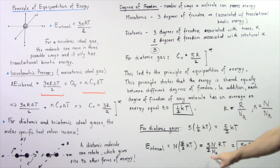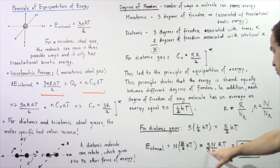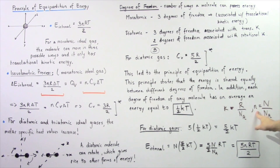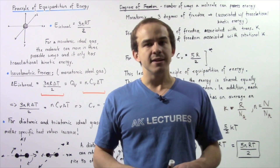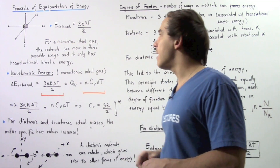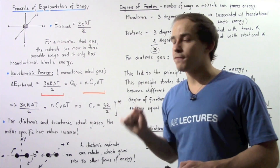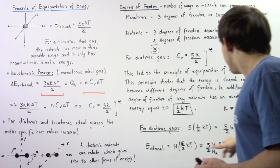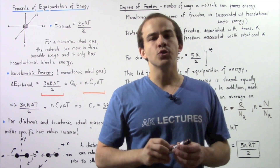Substituting k_B = R / N_A, we get (5/2) × R × T × (N / N_A). Since N / N_A equals lowercase n, the number of moles, the internal energy of a diatomic ideal gas system is (5/2) × n × R × T. Notice that for a monatomic system with three degrees of freedom, there is a 3 next to n; for a diatomic system with five degrees of freedom, there is a 5 next to n.